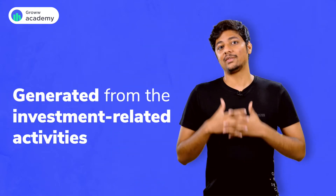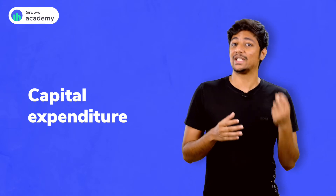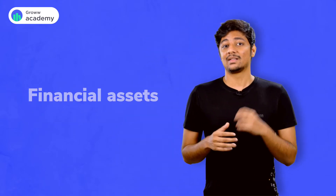The second part is cash flow from investing activities. When a company generates cash from its operations, it must decide what to do with it — and companies invest money too. The cash flow from investing comprises the net cash flow generated from investment-related activities, including purchase and sale of fixed assets like capital expenditure or capex, as well as purchase and sale of financial assets such as stocks and bonds.